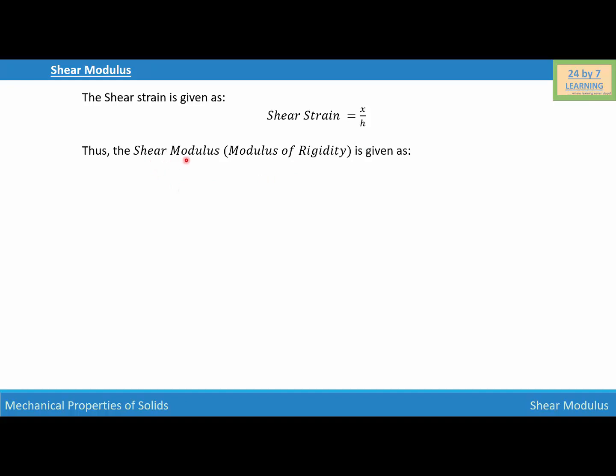So the shear modulus is also known as modulus of rigidity, and that is given as shear modulus is equal to shear stress over shear strain. Now let's substitute the value of shear stress and shear strain. If we do that, we will write shear modulus is equal to F over A divided by x over h, and we know that x over h is equal to θ, so that is approximately equal to F over A divided by θ. And this is how we define the shear modulus.